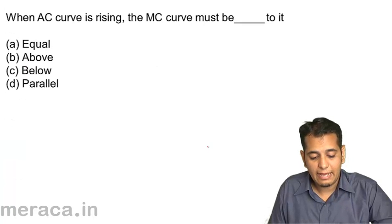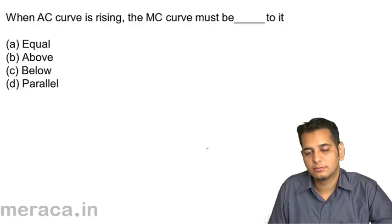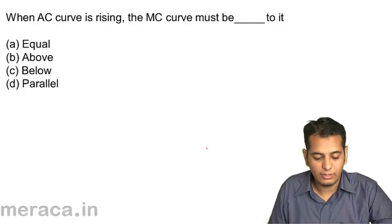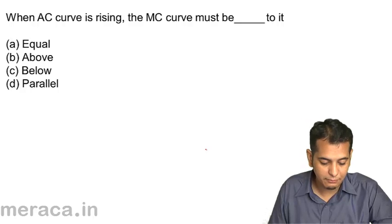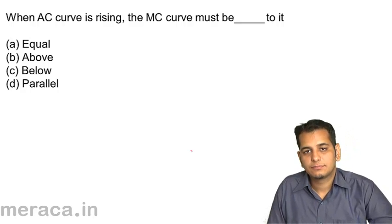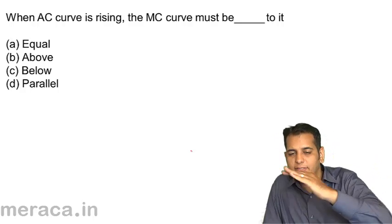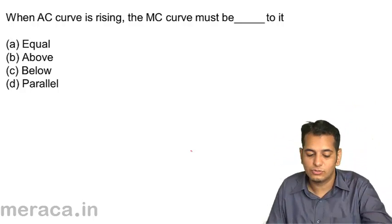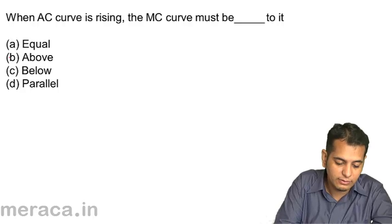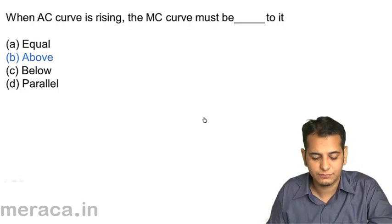When the average cost curve is rising, the marginal cost curve must be: A. equal. B. above. C. below. D. parallel. When the average cost curve is rising, the marginal cost curve is always above it.